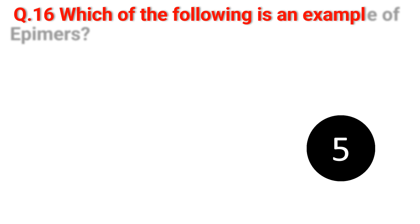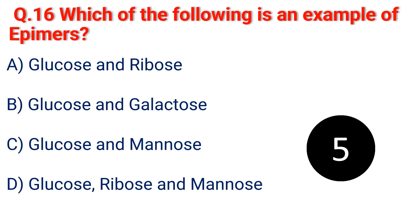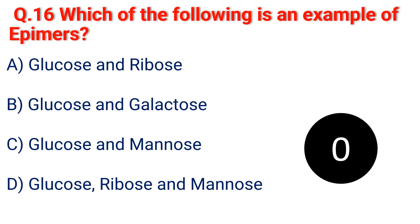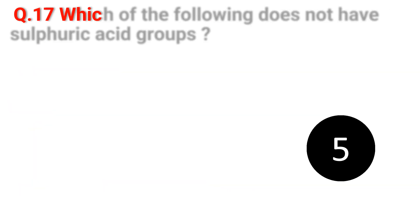Question 16. Which of the following is an example of epimers? A. Glucose and Ribose. B. Glucose and Galactose. C. Glucose and Mannose. D. Glucose, Ribose and Mannose. The answer is C. Glucose and Mannose.